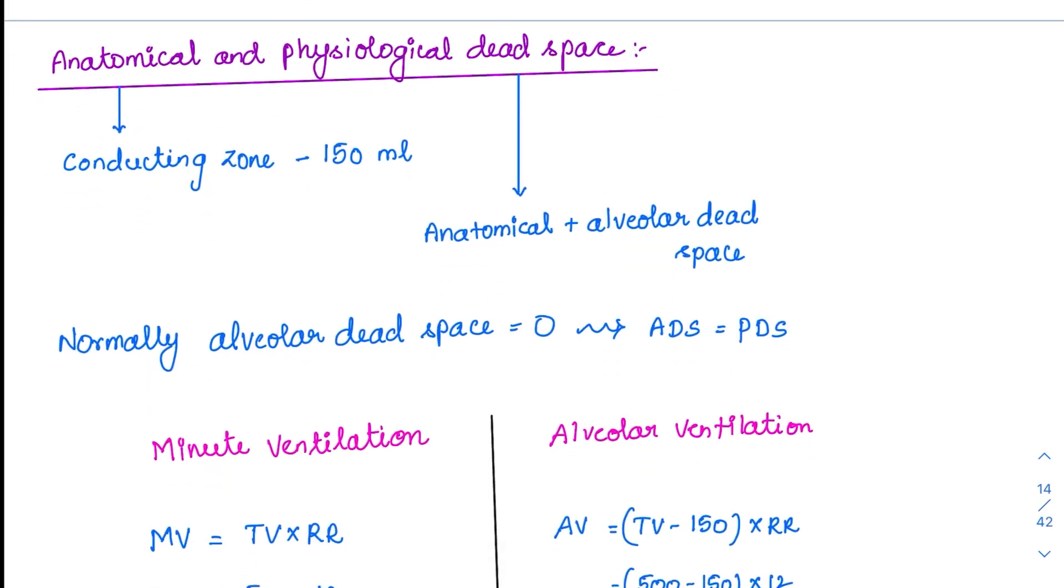Now coming to the anatomical and physiological dead space. So first of all, what is dead space? Dead space means, what is the major function of the lung? It is gas exchange. If gas exchange is not happening at a particular region, then the space is dead for us because we are not using it for gas exchange. So it is called dead space, the space where gas exchange is not happening.